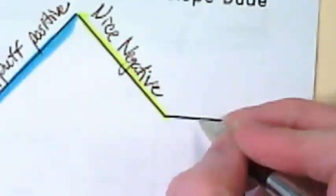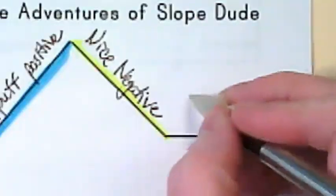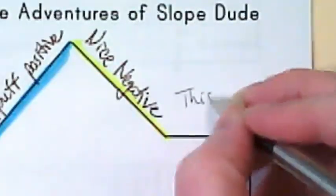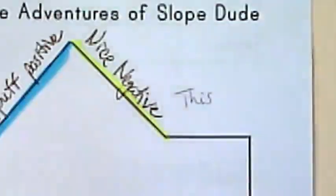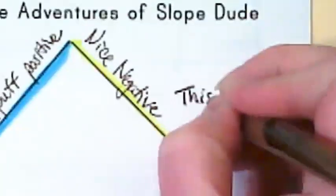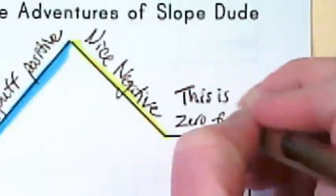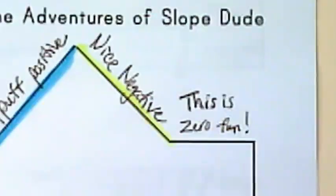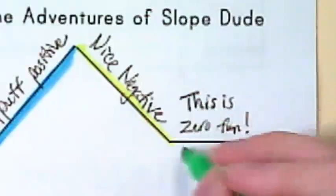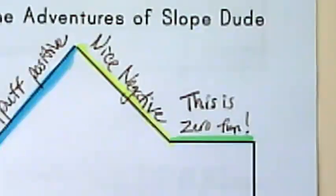What does slope dude say when it's flat? Why? Because going across something flat is not as fun as going speeding down a hill.